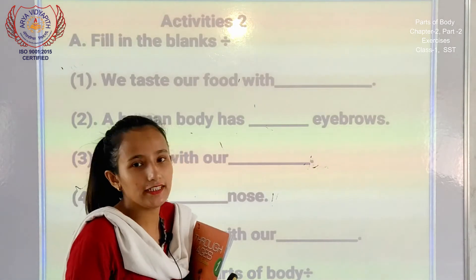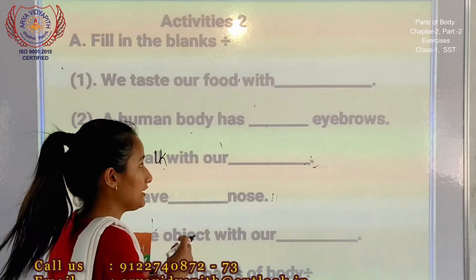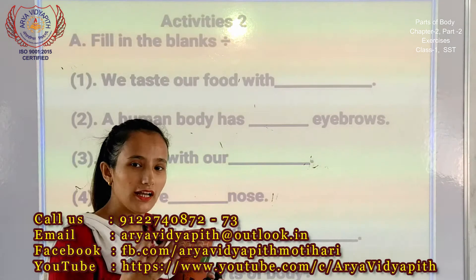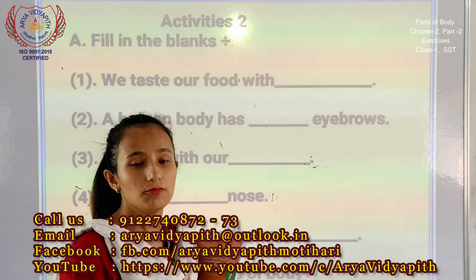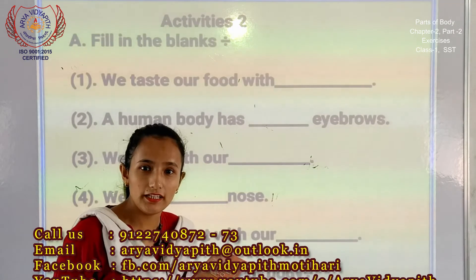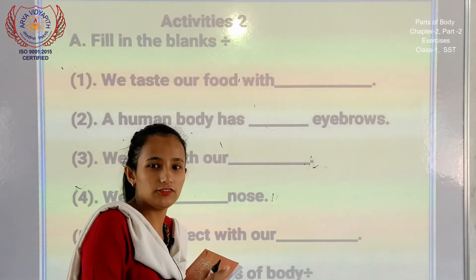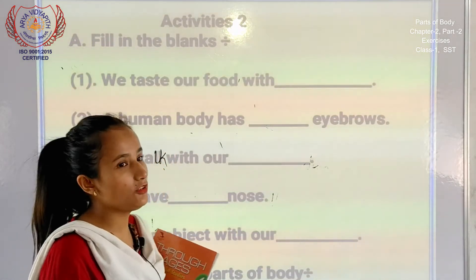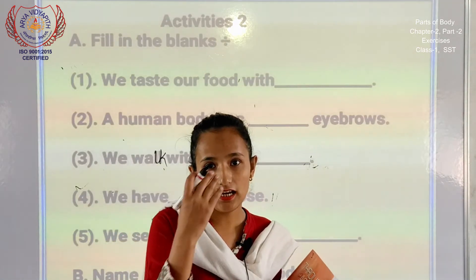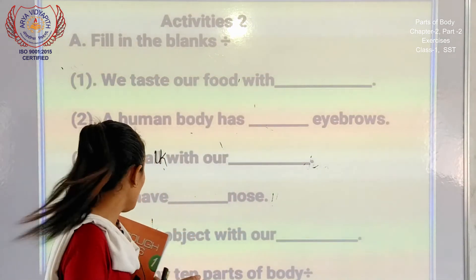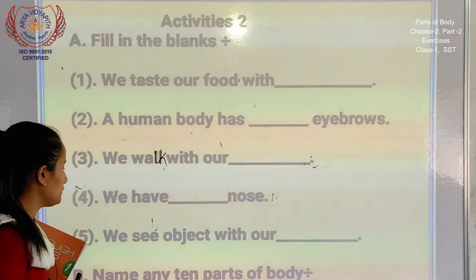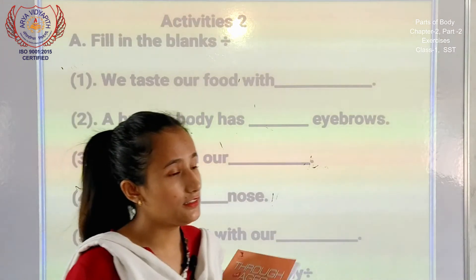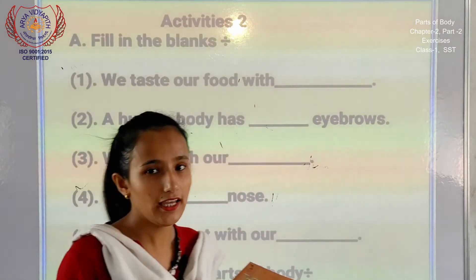Book mein aap loko pehle padh chuke hain — parts of body aap loko yaad hai, to ye fill in the blanks bhi kar sakte hain. We have dash nose — how many noses do we have? Aap loko ye bhi fill karna hai. We see objects with our dash — hum loko kaise dekhte hain? Aap loko uska answer likhna hai.